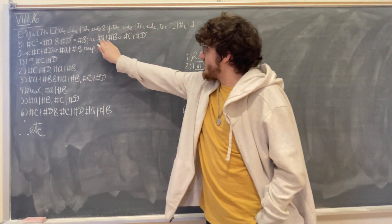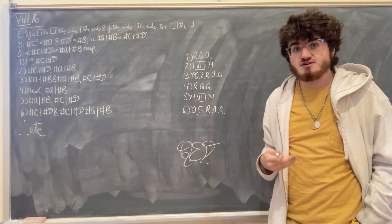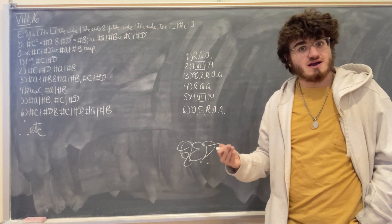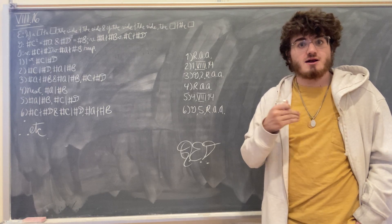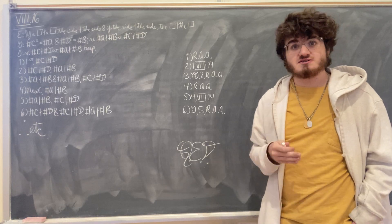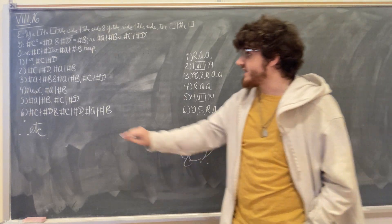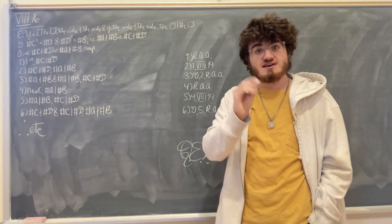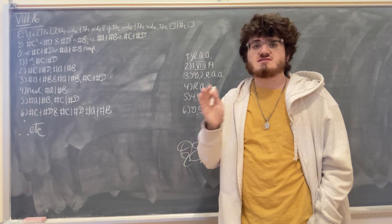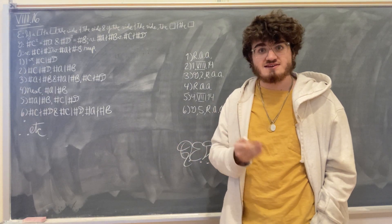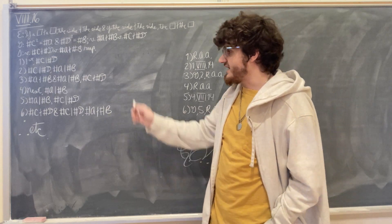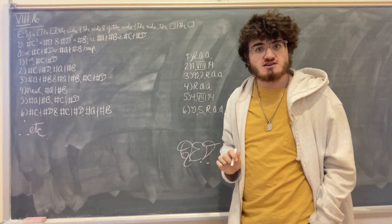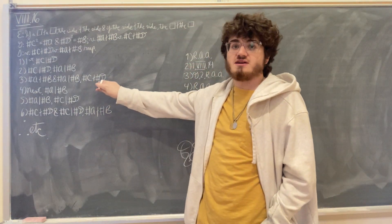Let's deal with that first case. If the number A does not measure the number B, we want to say that the number C does not measure the number D. For if this is not the case, then the number C will measure the number D. But if the number C does measure the number D, then the square on C will measure the square on D — that's Proposition 8.14, that if the side measures the side, the square will also measure the square. So because C measures D, C squared will measure D squared. But we know C squared is A and D squared is B, so A has to measure B. But this is contrary to what we were given; we were given that A does not measure B. So if C does measure D, the number A both does not and does measure B, which is obviously impossible. And so we can conclude that the number C does not measure the number D.